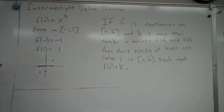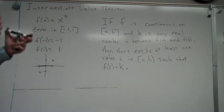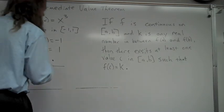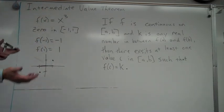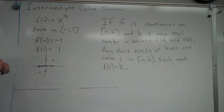But this intermediate value theorem doesn't necessarily tell you where it crosses through. So this might be helpful if you have a very complex function, and especially maybe before there were calculators, to try and find where a zero might be, prove that a zero might be at a certain place on a graph somewhere.